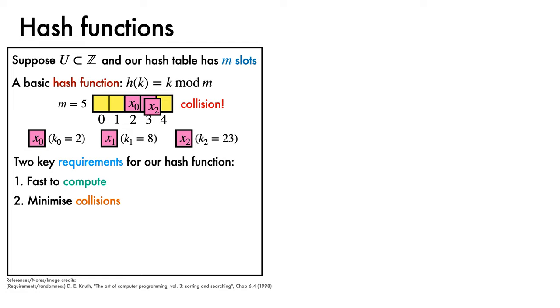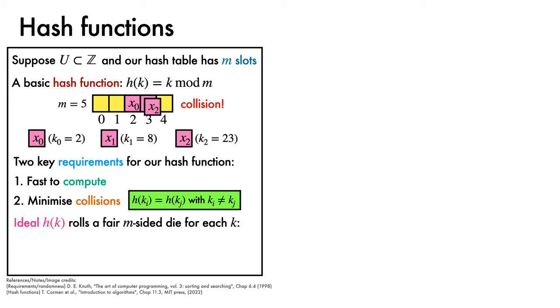Second, the hash function should minimize collisions, defined to be the event that distinct keys are mapped to the same value. Unless we know all the keys that will be used in advance, our ideal hash function for minimizing collisions rolls a fair M-sided die for each key K. Such a mapping is sometimes referred to as an independent uniform random hash function.